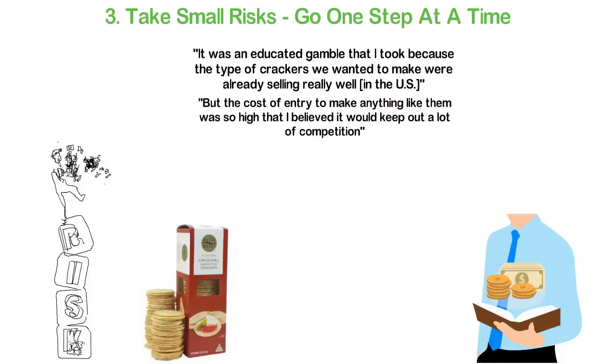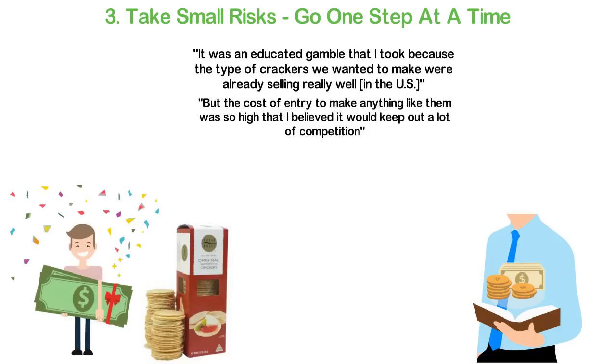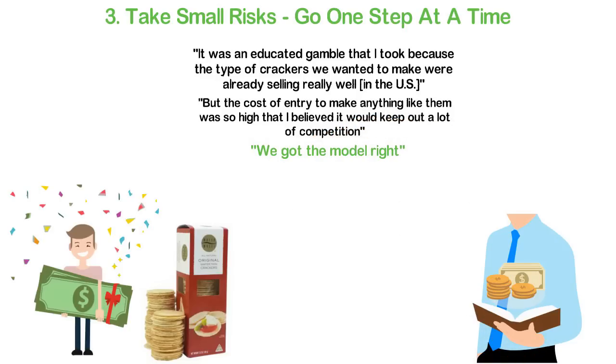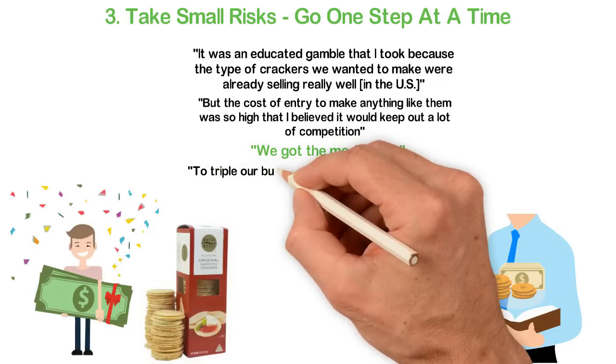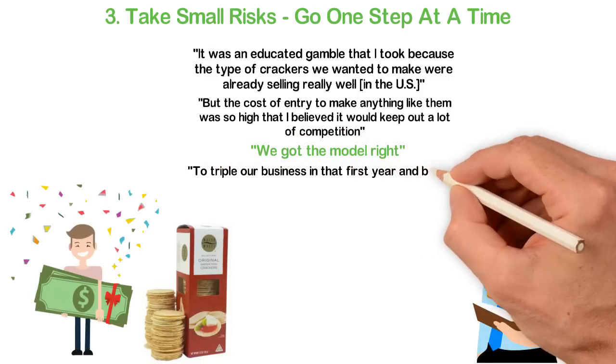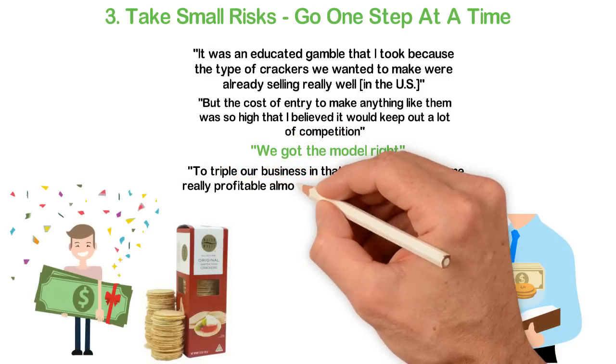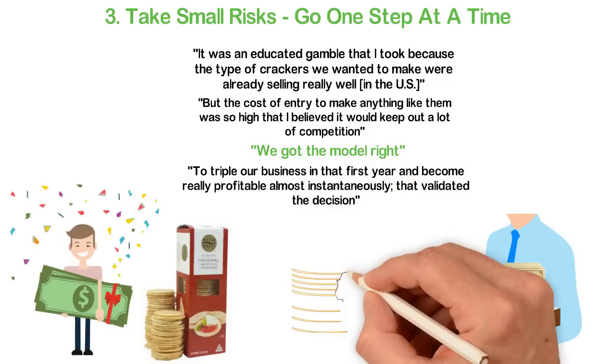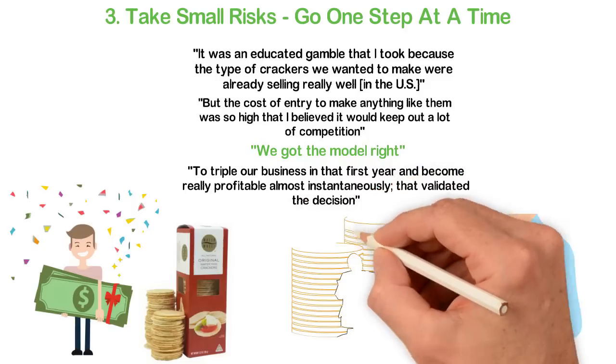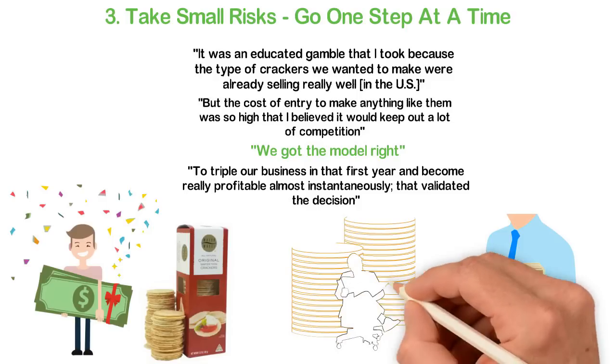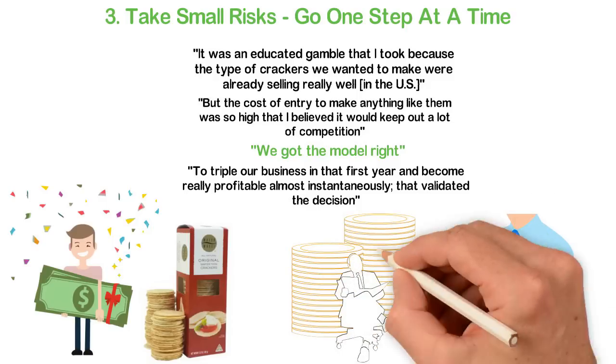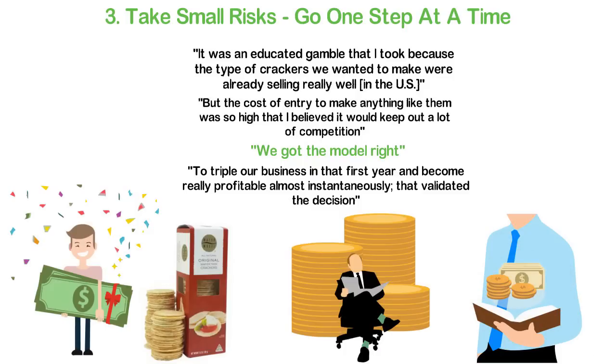Guess what? In 12 months, he started recording huge successes. We got the model right, Liberman said. To triple our business in that first year and become really profitable almost instantaneously, that validated the decision. In six years, 34 Degrees distributed its crackers to grocers in all 50 states and Canada and was already generating annual revenue valued at $10 million.